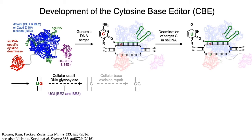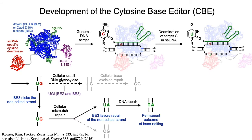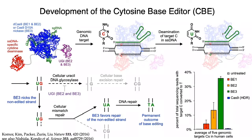To trick the cell into replacing the G on the opposite strand with an A, the most efficient base editors also nick the unedited G-containing strand, which stimulates the cell into remaking that strand using the uracil-containing strand as a template. The result is conversion of a targeted CG base pair into a UA or TA base pair. In our original report in 2016, BE1—the simple fusion of a dead Cas9 with a cytidine deaminase—gave low but detectable editing efficiencies. BE2, which added the UGI domain, improved editing efficiency substantially. And BE3, which added the nicking feature to BE2, edited most efficiently of the three original cytosine base editors.